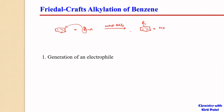Here the alkyl group is added, so it is called alkylation. Instead of AlCl3, we can use other Lewis acids such as BF3 or FeCl3 as a catalyst in this particular reaction. BF3 and FeCl3 can also be used in the Friedel-Crafts alkylation reaction.